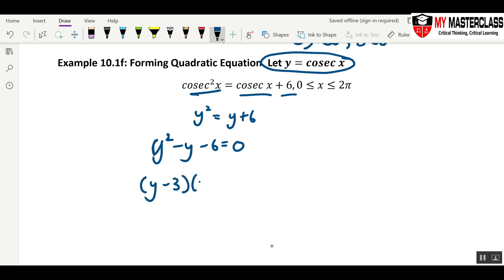y minus 3, y plus 2 equals to 0. y equals to 3 or y equals to negative 2. Don't be too happy yet. Don't just leave the answer here.